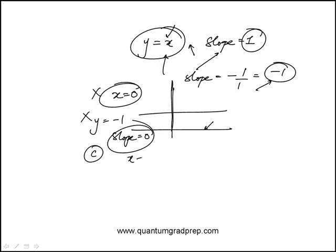C is x plus y equals 0. If we rewrite this in the slope-intercept form, it does have a coefficient of minus 1, which is the slope. So C works.